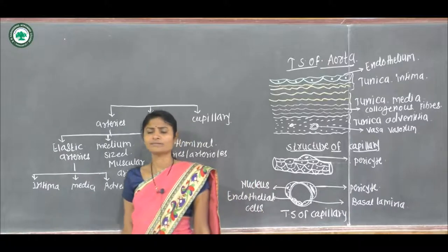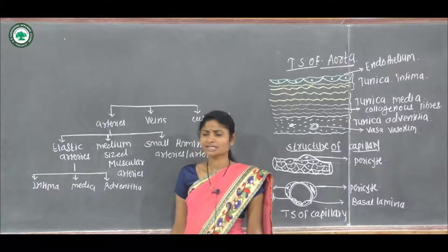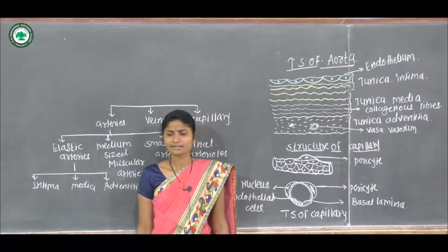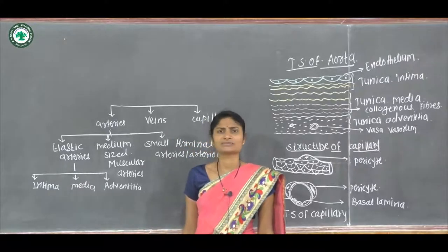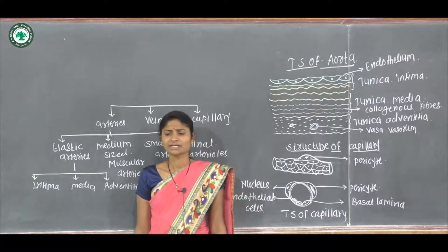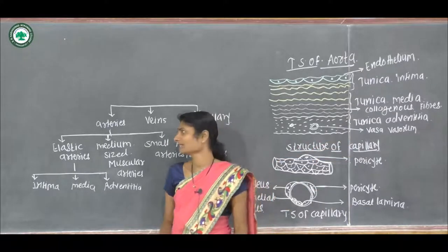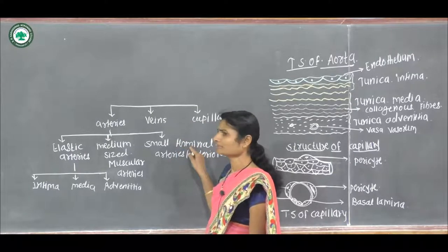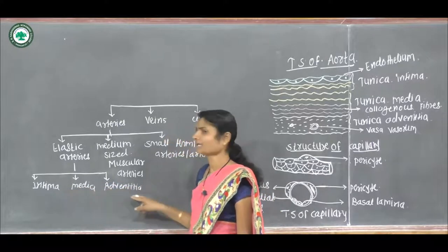Because of the large amount of muscles present in the tunica media, these are called muscular arteries. They also contain elastic, collagen, and reticular fibers. The tunica adventitia is very broad and mostly contains collagen and elastin, and also contains vasa vasorum capillaries. The next type is small terminal arteries and arterioles, whose walls are again divided into three parts: intima, media, and adventitia.